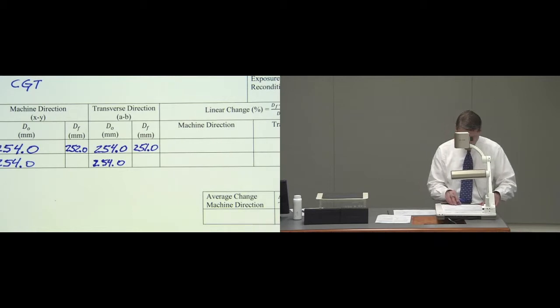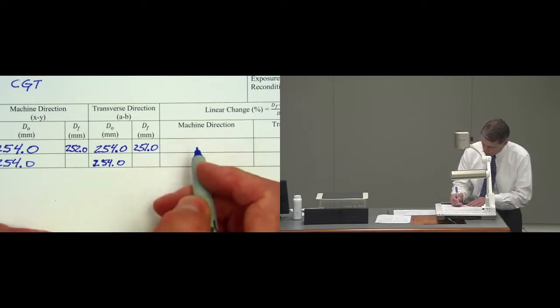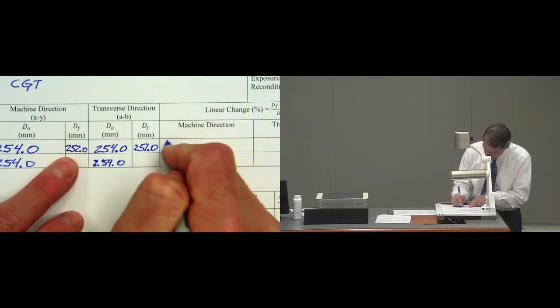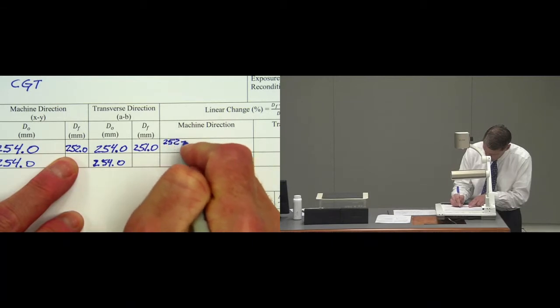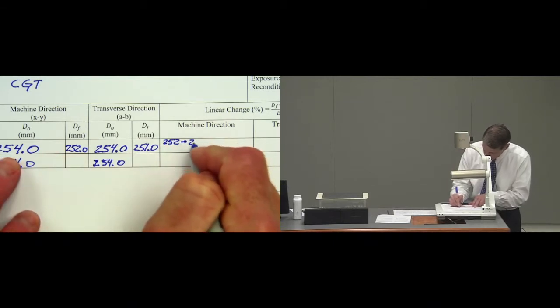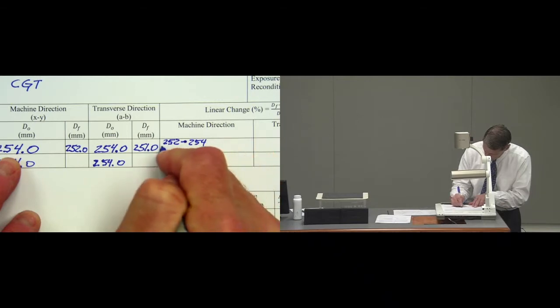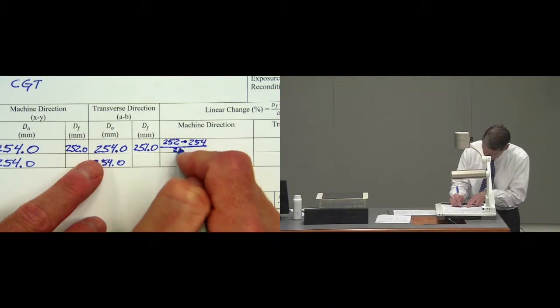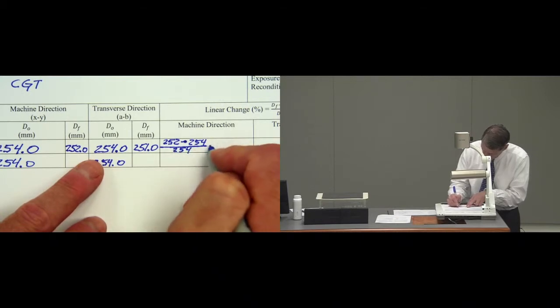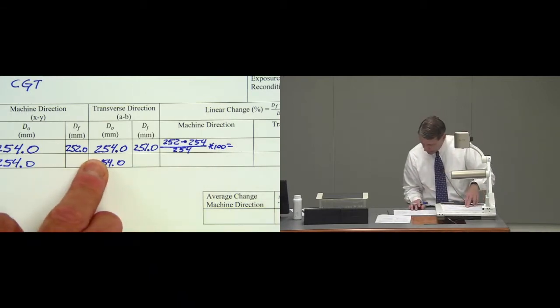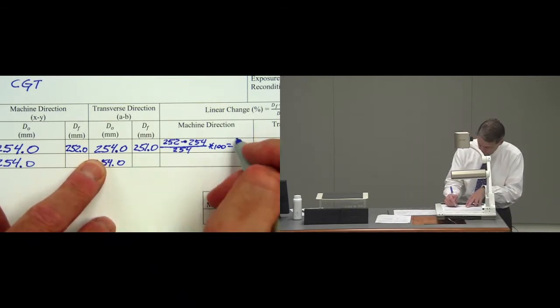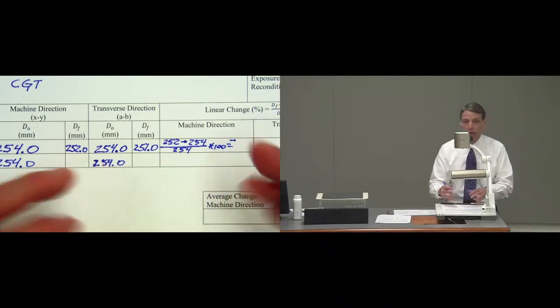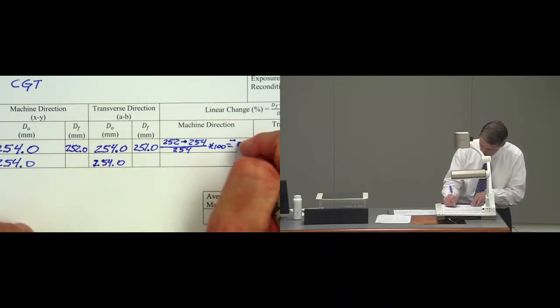So here are the calculations for the edge specimen. The final is 252 minus 254 divided by the initial which is 254 and that's multiplied by 100 to put it in percent. And if you calculate that I get minus 0.79 percent because the specimen became smaller.